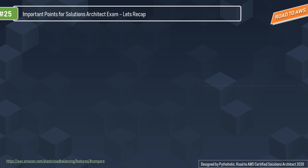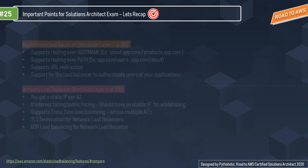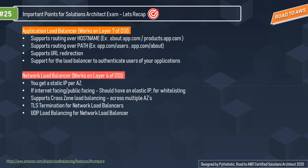Let's do a fact check on important topics for the exam. The application load balancer works on Layer 7 of the OSI reference model — the application layer. It supports routing over hostname, for example about.app.com or products.app.com, so it can route to different services in the same instance. It also supports routing over path, such as /users or /about, and it supports URL redirection — for example directing traffic from HTTP to HTTPS. It also has support for authenticating users of your applications.